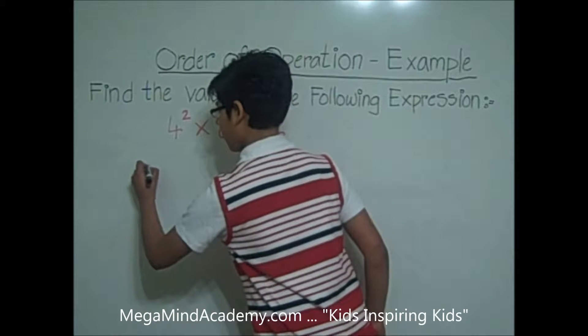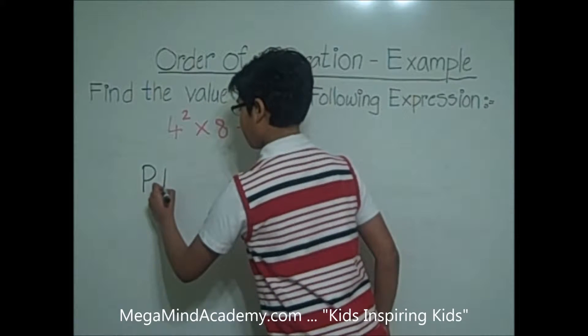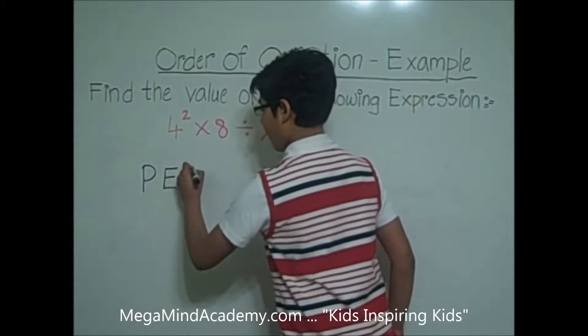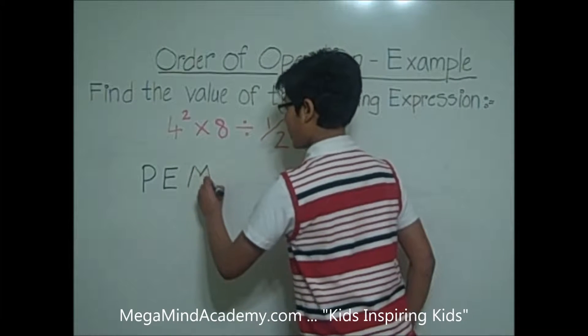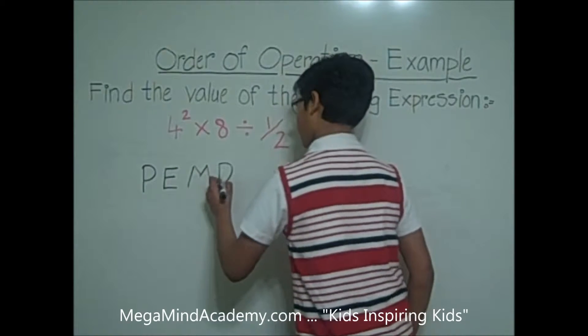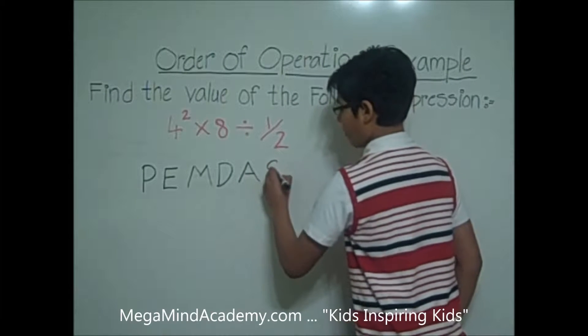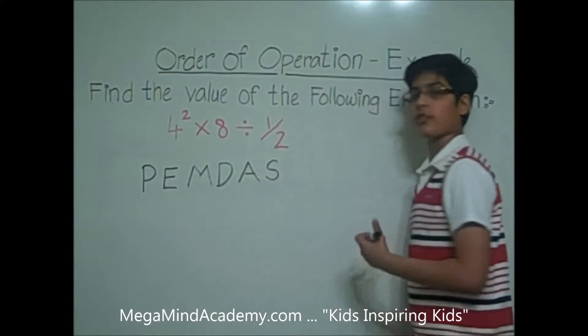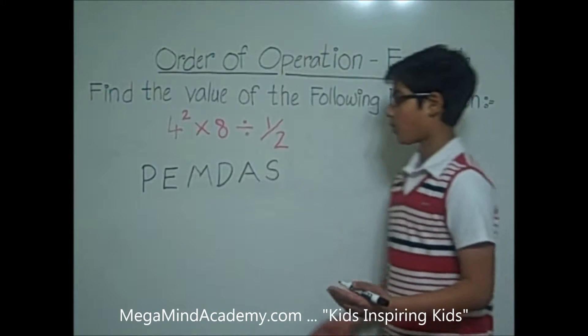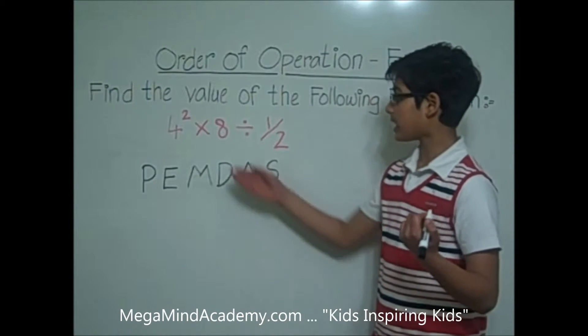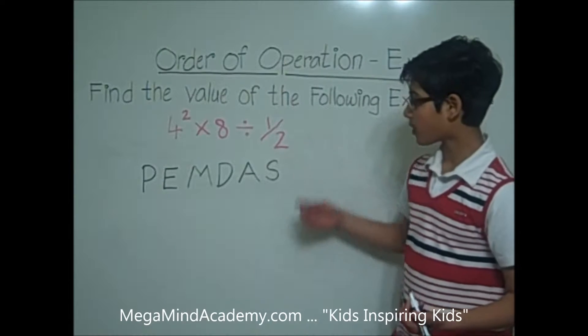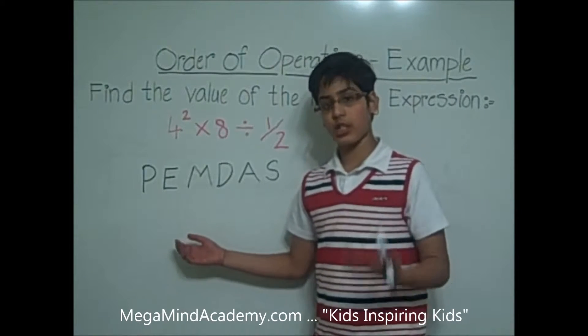P for parentheses, E for exponents, M and D for multiplication and division from left to right, and A and S for addition and subtraction from left to right. So, when we solve these types of expressions, we have to use the order of operations.